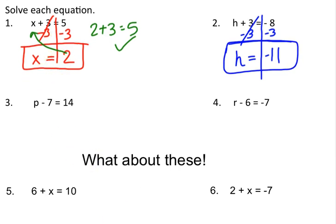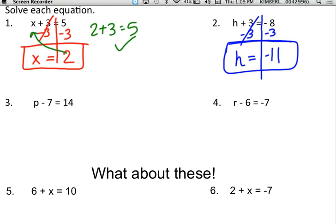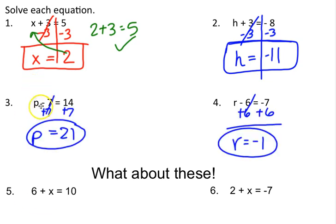On 3 and 4, go ahead and press pause and try these two on your own. On number 3, they were subtracting 7 so I added 7 to both sides — 14 plus 7 was 21, so P equaled 21. On number 4, they were subtracting 6 from the variable so I added 6 to both sides. Since the signs are different you're going to subtract them to get 1, then keep the sign of the bigger number — negative 1.